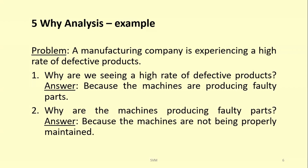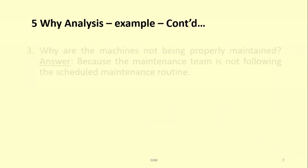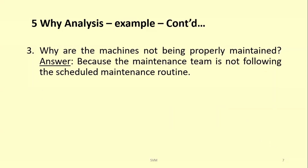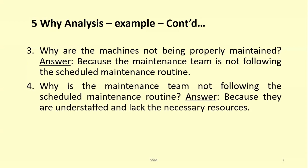Third why: Why are the machines not being properly maintained? Answer: because the maintenance team is not following the scheduled maintenance routine — whatever preventive maintenance plan was made, they are not following it. Fourth why: Why is the maintenance team not following the scheduled maintenance routine? Answer: because they are understaffed and lack the necessary resources — meaning the required manpower is not there, and tools and equipment needed for maintenance activities are also lacking.